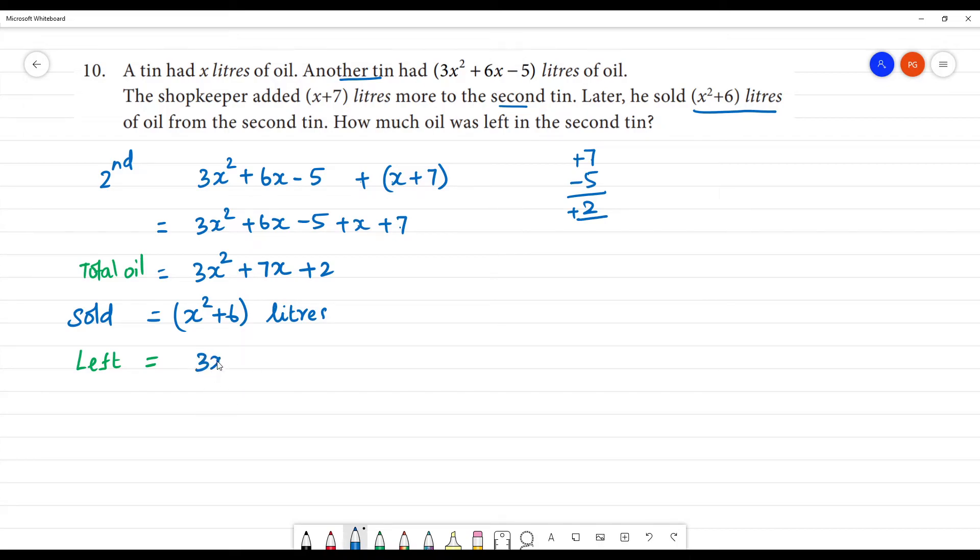That is 3x² + 7x + 2. So, what do we subtract? If we subtract, we subtract. This is equal to x² + 6. We subtract.